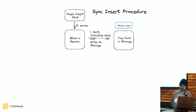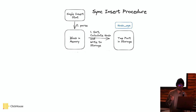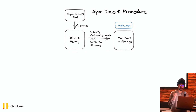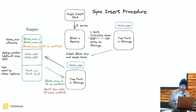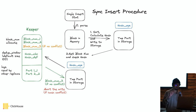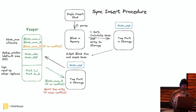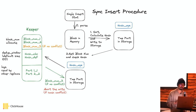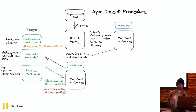Let's look at the details. This is the sync insert procedure. First, we parse an insert and generate a block in memory. Then we sort, calculate, and hash it, and write it into local storage as a temporary part, which is not committed yet. The deduplication window is maintained in ZooKeeper. In ZooKeeper we have three types of keys: first, it's used to allocate a unique block number; second, it stores the recent hash IDs to deduplicate; and third, it is the write-ahead log (WAL) blocks to record if a part is committed successfully.